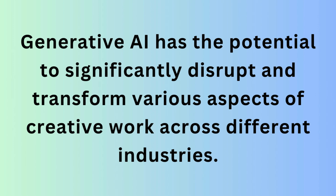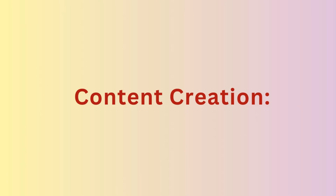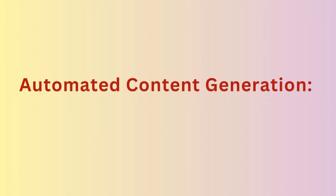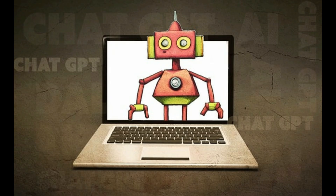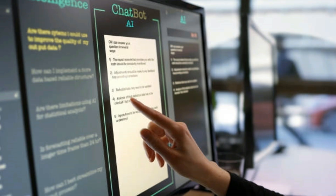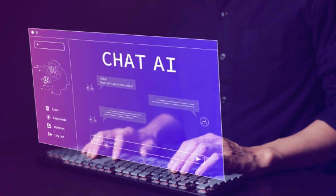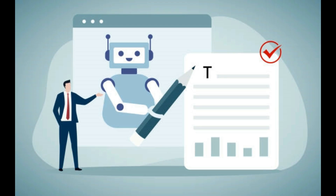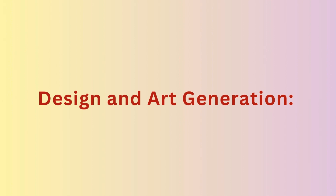How Generative AI could disrupt creative work. Generative AI has the potential to significantly disrupt and transform various aspects of creative work across different industries. First is Content Creation — Automated Content Generation. Generative AI can automate the creation of various types of content such as articles, blog posts, and even video scripts, leading to increased efficiency and cost savings. For instance, OpenAI's GPT is capable of generating human-like text based on prompts, saving time for content creators and marketers.